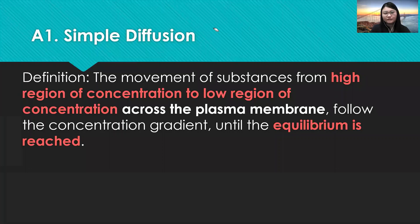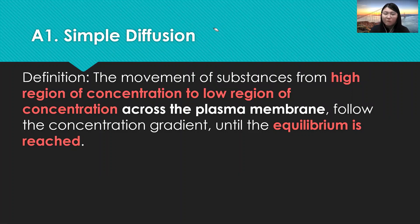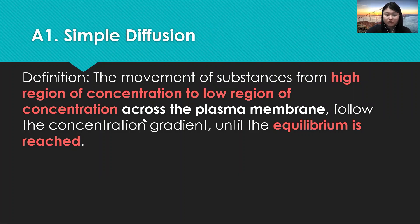Now let's look at the first category of passive transport, which is simple diffusion. The definition of simple diffusion is the movement of substances from a high region of concentration to a low region of concentration across the plasma membrane, following the concentration gradient, until equilibrium is reached.